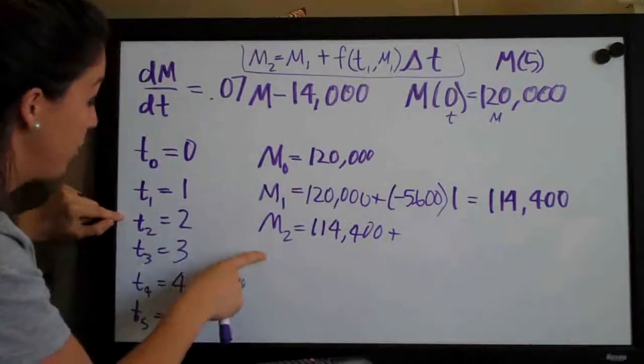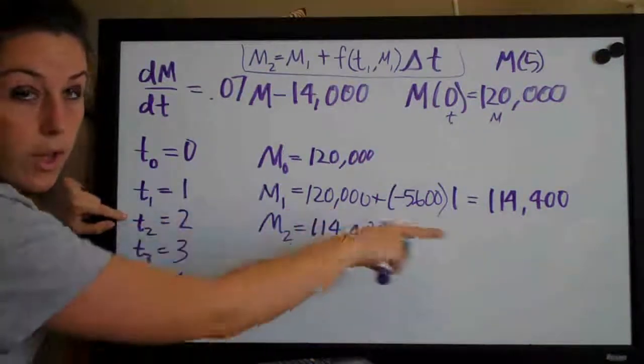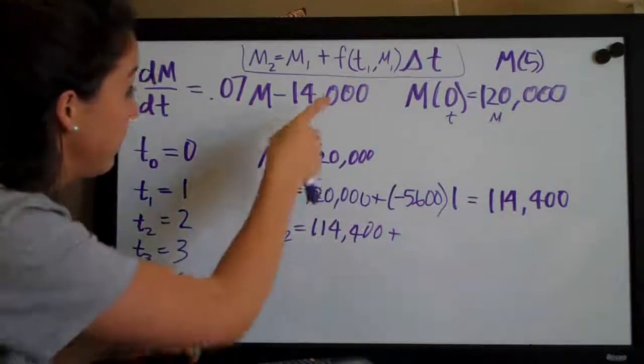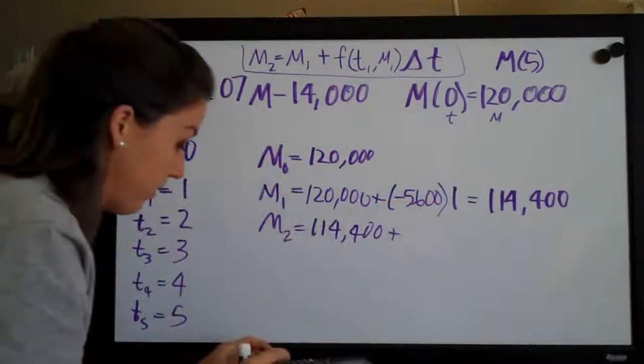So when you're looking here, you always plug in the two values from the row previous. So in this case, we're plugging in 114,400 to this equation here.